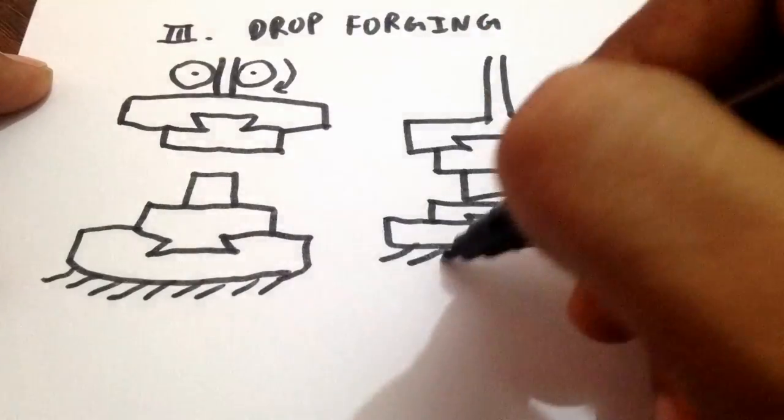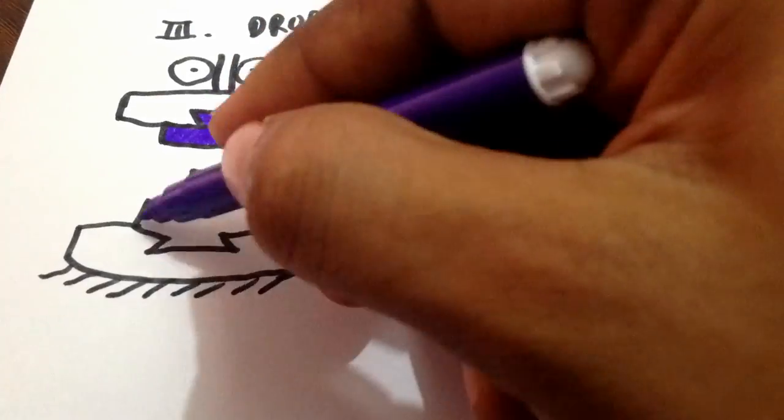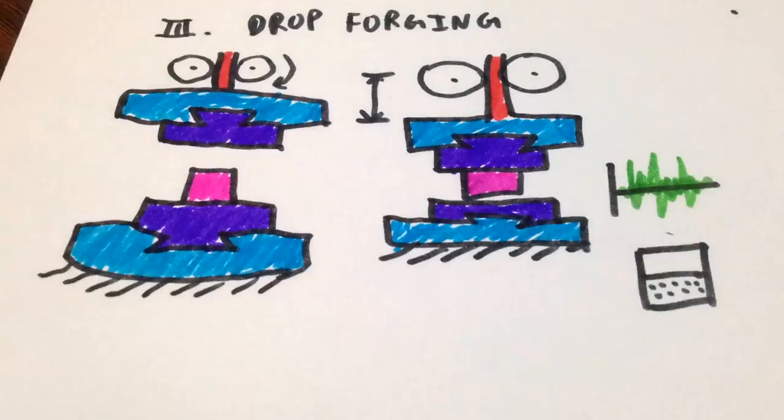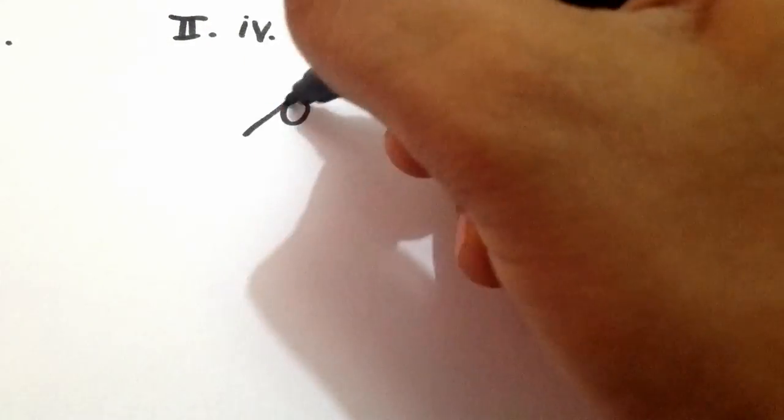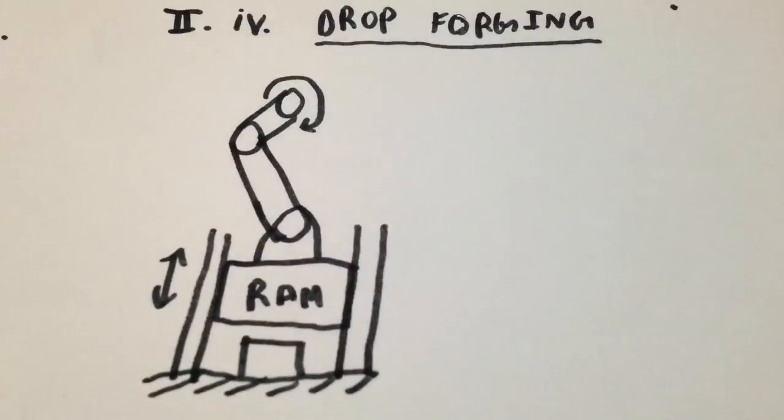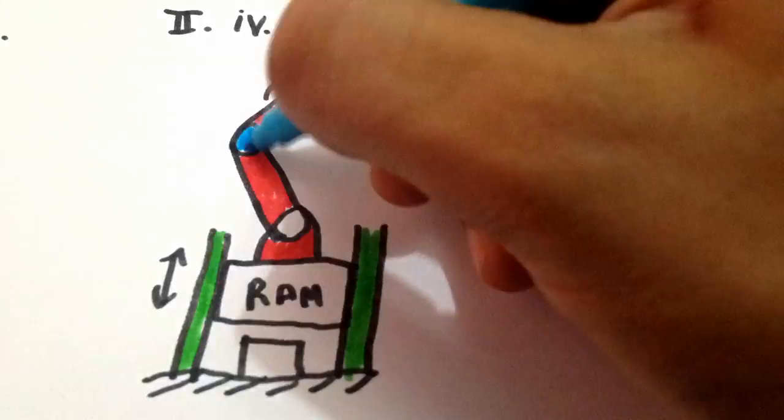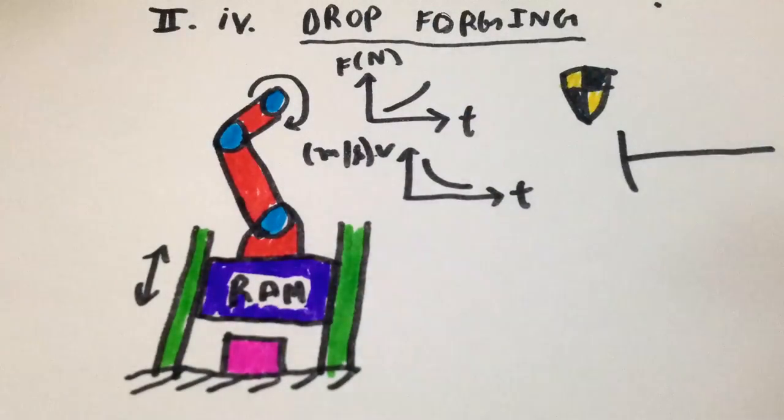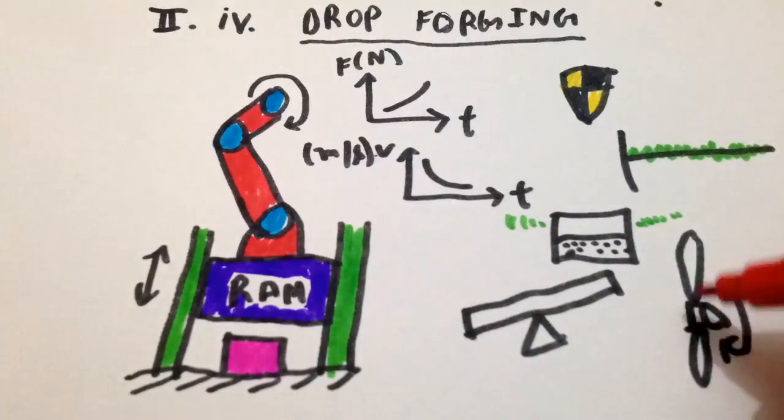Third comes drop forging which utilizes closed-impression die to obtain the required shape. The dies are matched and simply attached to a movable ram and fixed anvil. The force of the blow can be varied by changing stroke but the boards are liable to frequent breakage and the process introduces more noise and vibrations. Fourth comes press forging which is done in presses rather than hammers. They offer more accurate dimensions by slowly squeezing the workpiece. These presses have high durability and produce less vibrations and noise. They are used to manufacture large reverse propellers etc.